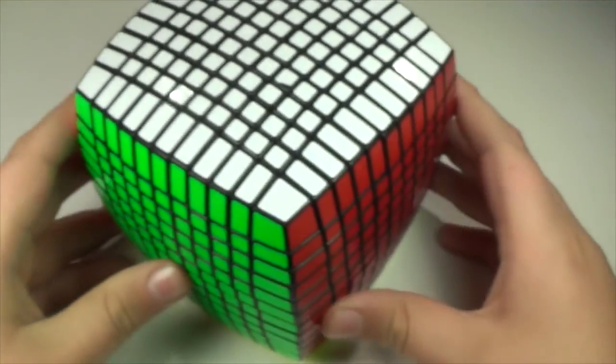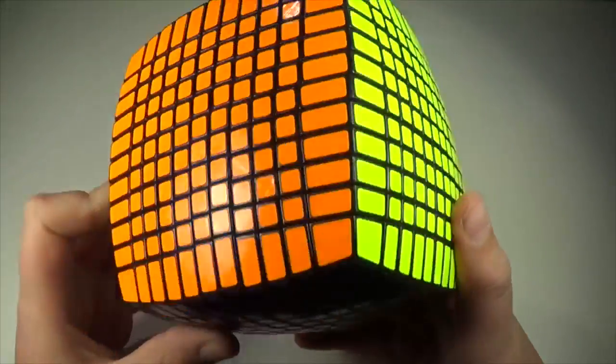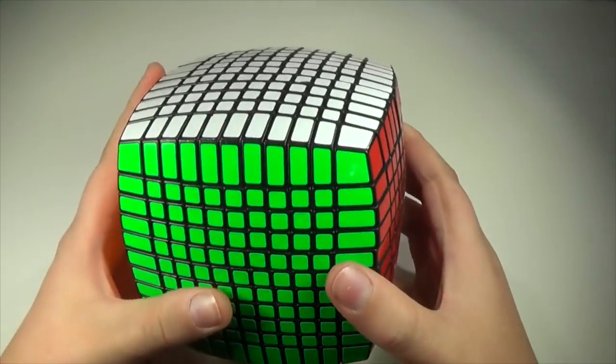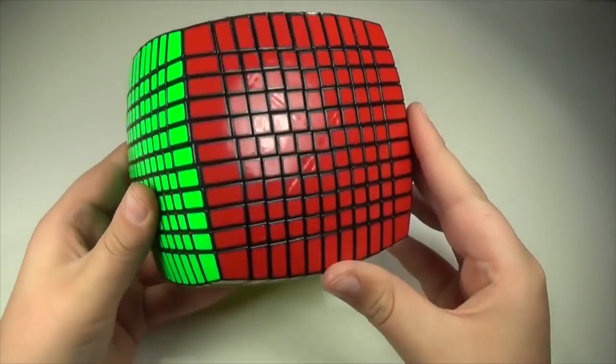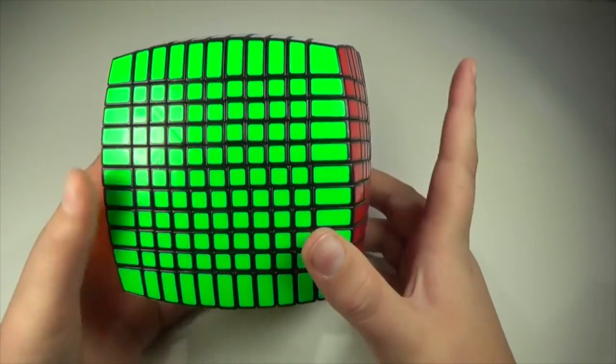And now, the best for last, the 11x11. As you can see, this cube is an absolute beast. I had my eye on it for a while at Worlds before I actually started to negotiate a trade with the guy who had it. I ended up giving away 6 or 7 cubes and about $75 for this cube.